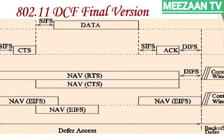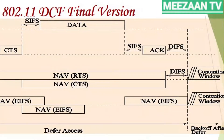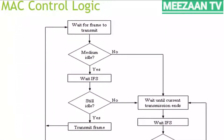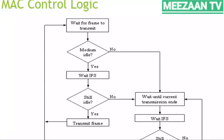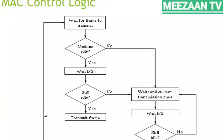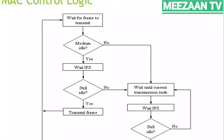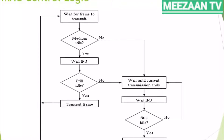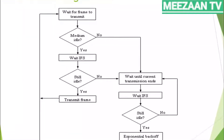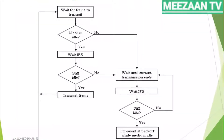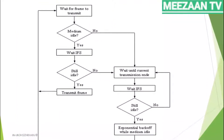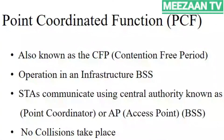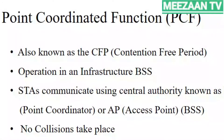This slide shows the final version of DCF with complete RTS/CTS intervals and NAV, showing communication between two parties in detail. The flowchart of MAC control logic: a station waits for a frame to transmit, then checks the medium. If idle, it waits for DIFS; if still idle, it transmits. If busy, it waits until transmission ends, then waits again. If still idle, it sets its exponential backoff and then starts transmitting.